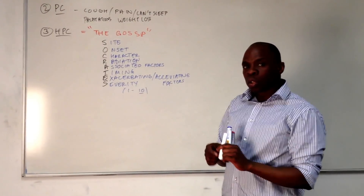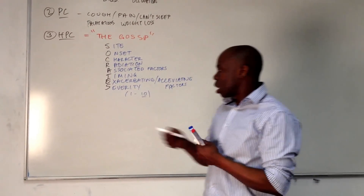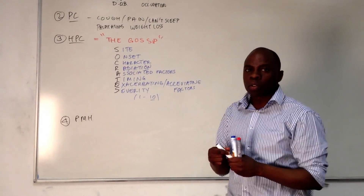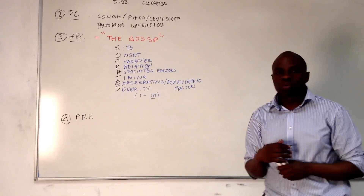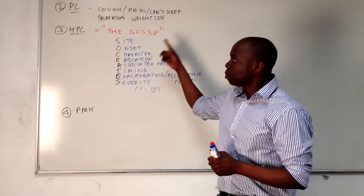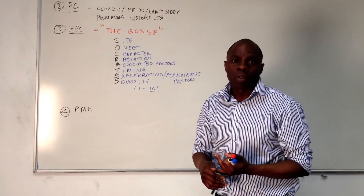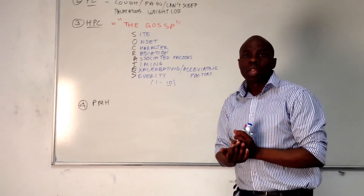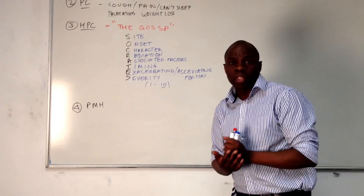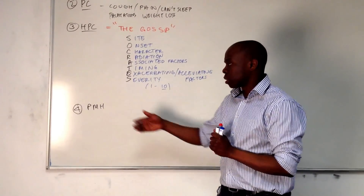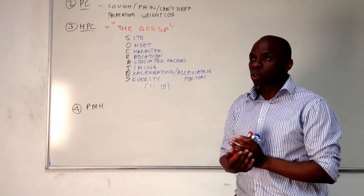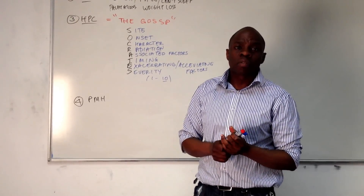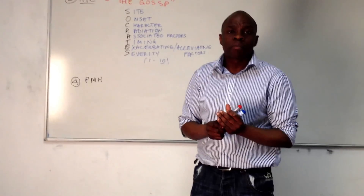Then we move on to past medical history — PMH. For past medical history, you're trying to find out: have they had a problem like this before? Have they had any other problems? Are they seeing any doctors at a hospital? If they're attending outpatients, get the name of the doctor and perhaps the ward or department. You can also ask if they've ever been to hospital for any operations.